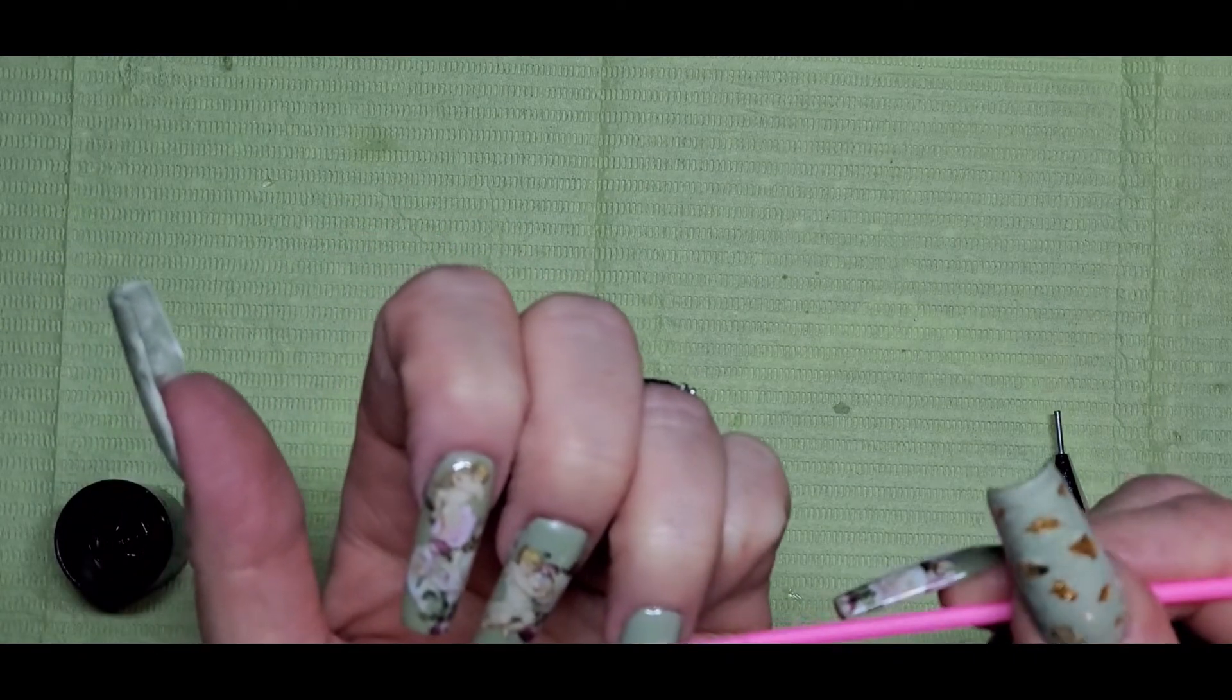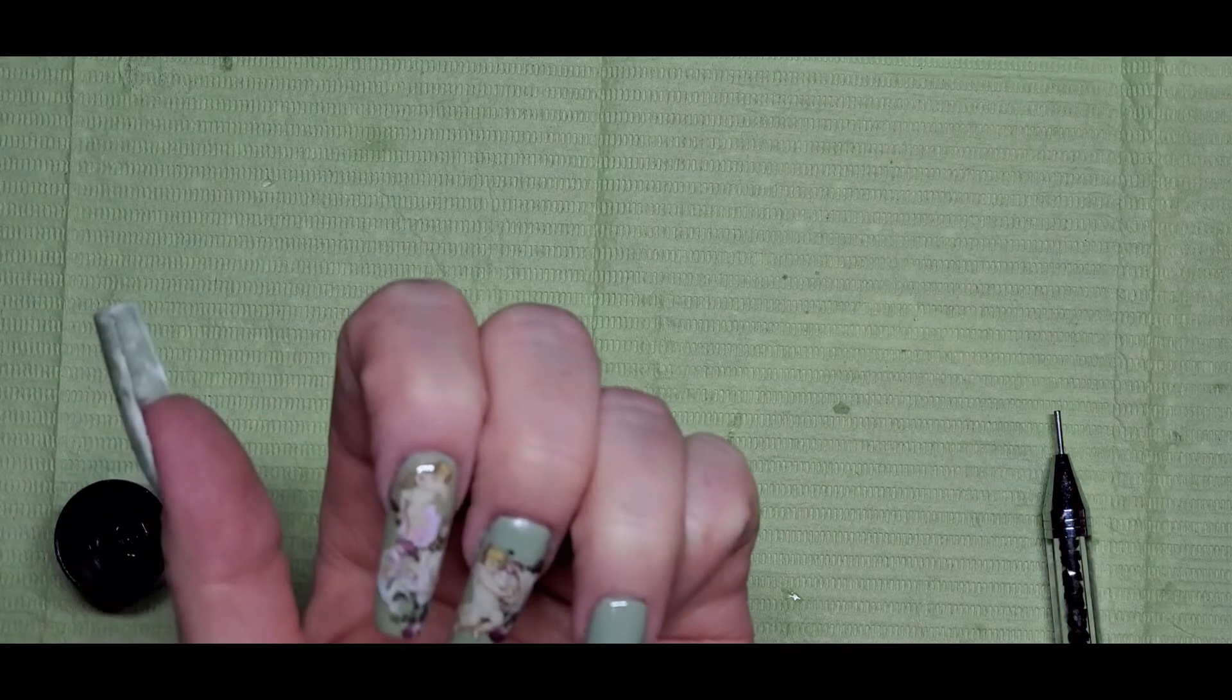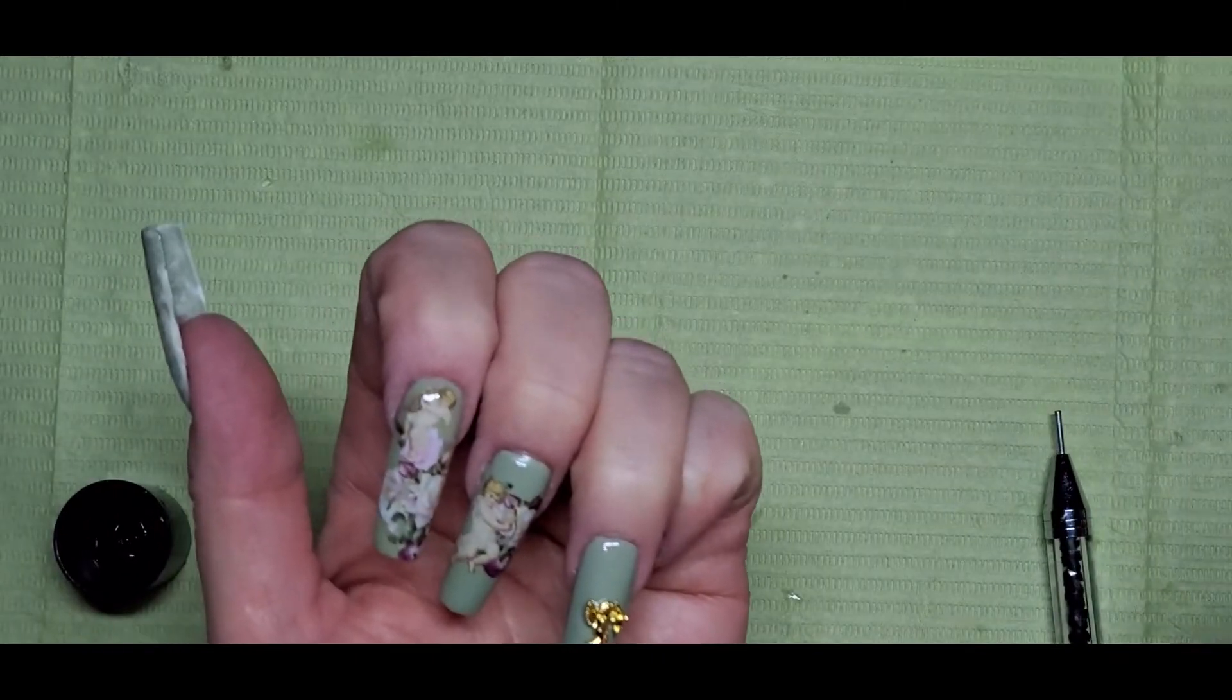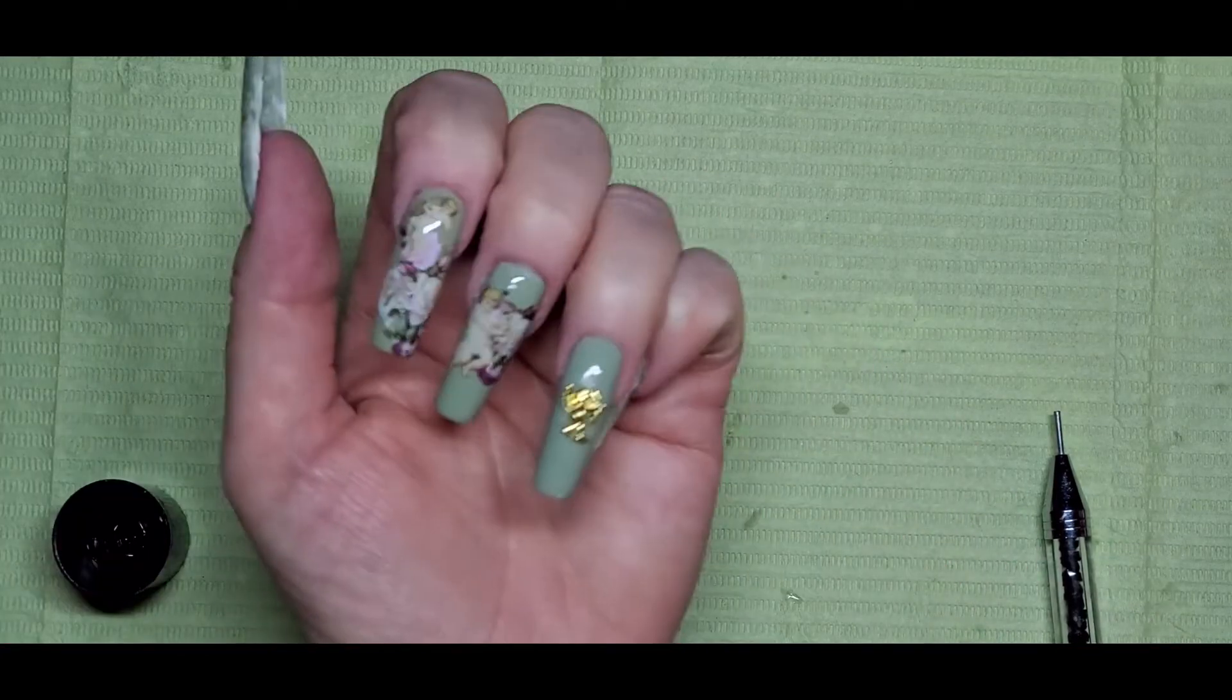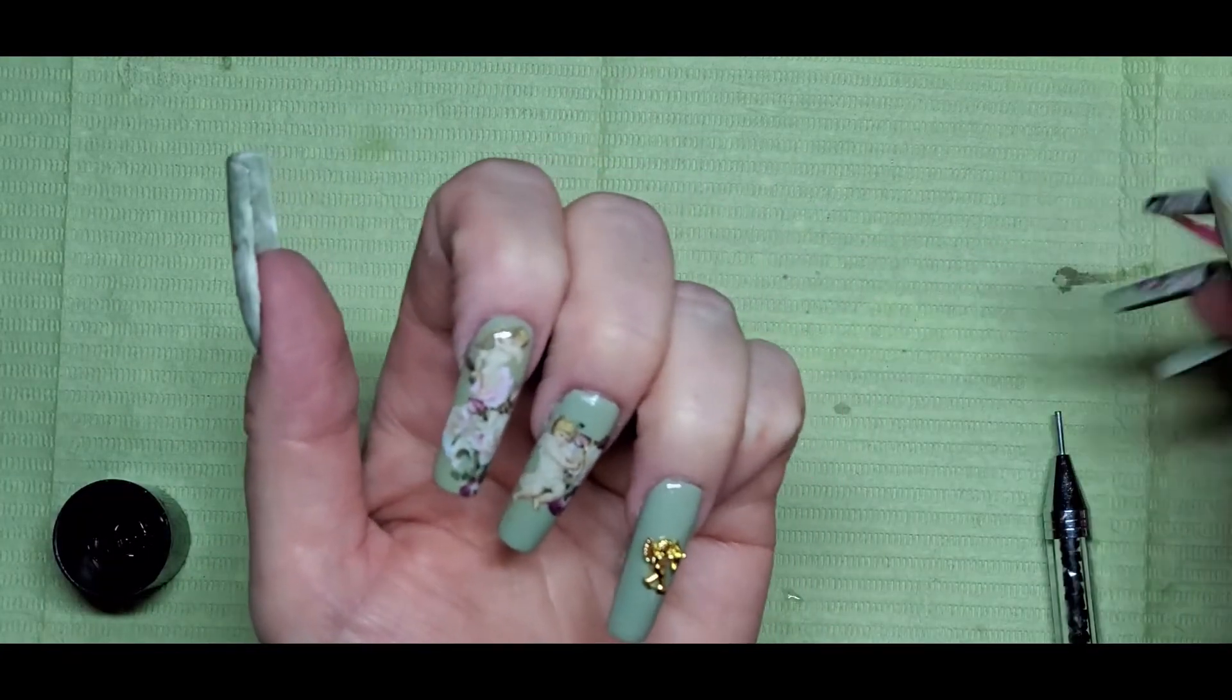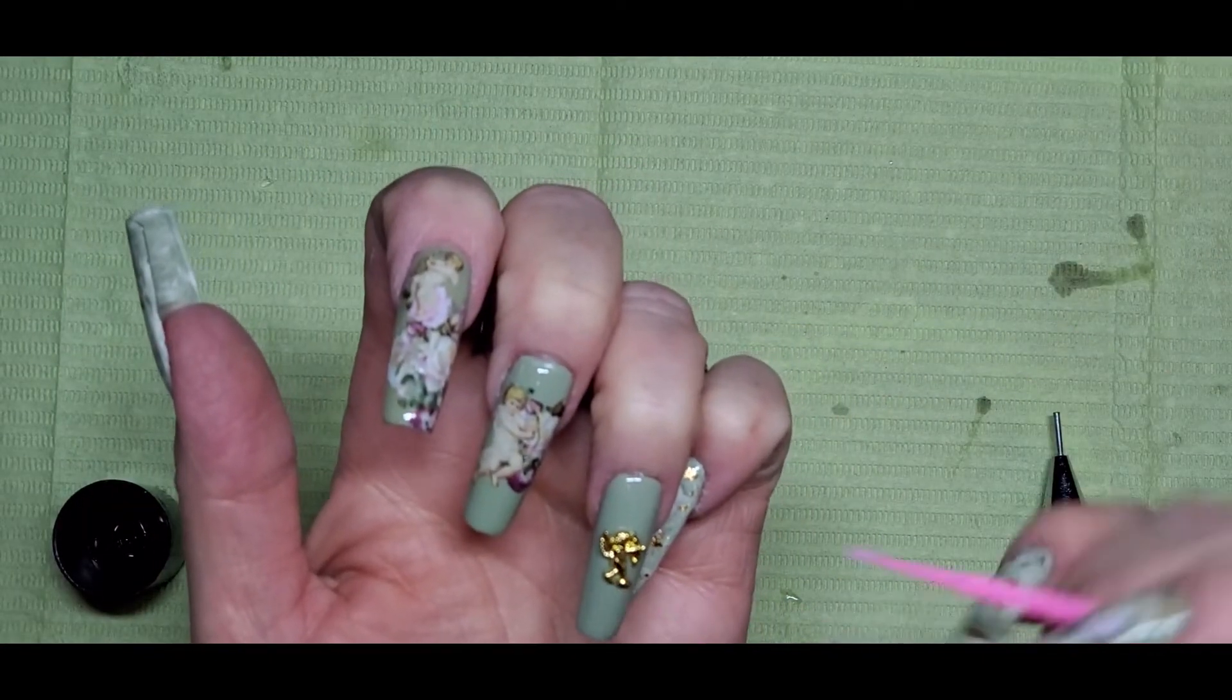I did decide to go in with the gold charm. I think the gold just tied in with the gold flakes. The white one, I think if I would have put it on the middle finger without a foil there, it would have worked because it's kind of a large charm. But I decided to go with the gold one and I think it looks cute.